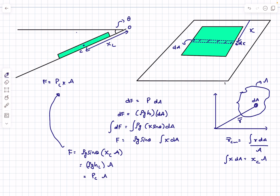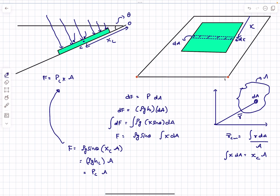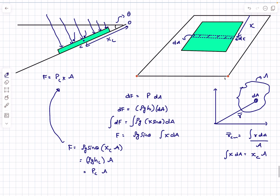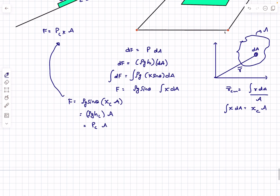One important note: the magnitude of the force is Pc times area, but the point of application of the force is not at the centroid — it will be somewhere deeper than the centroid. This is because pressure increases with depth, so the pressure distribution is non-uniform and the center of pressure shifts below the geometric centroid. For this problem we don't need to derive that, but it's useful to keep in mind.